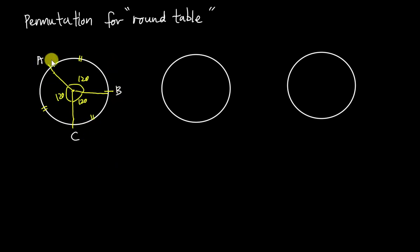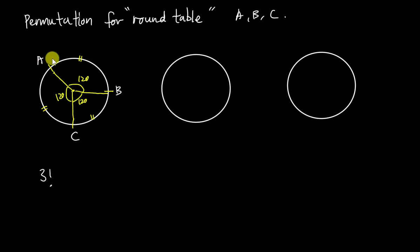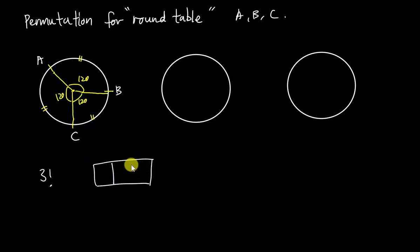We have three positions and we want to place three persons A, B, and C into these three positions. Most of you will answer three factorial, because we have three places and three different persons. But that case is only valid if they are sitting in the same row like A, B, C. In a round table, that is wrong.